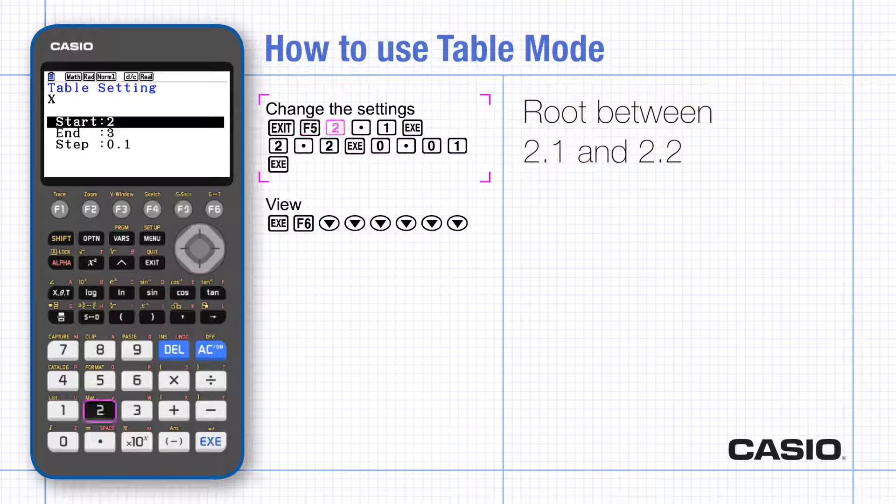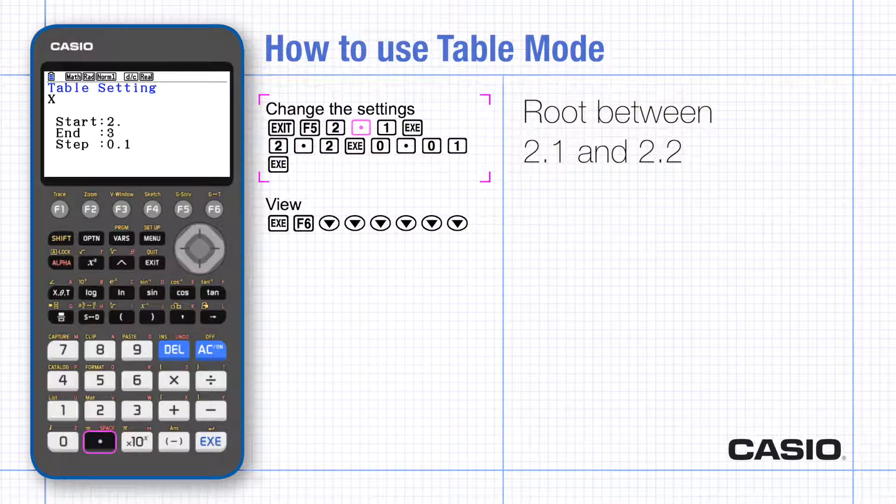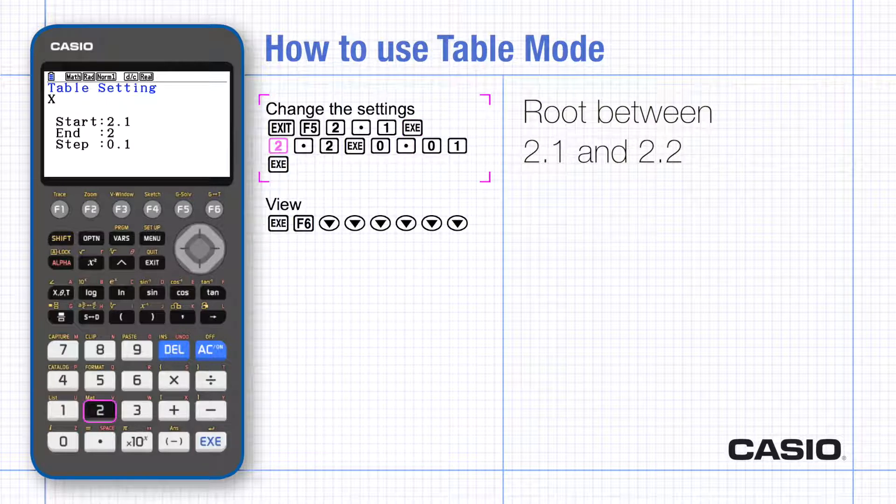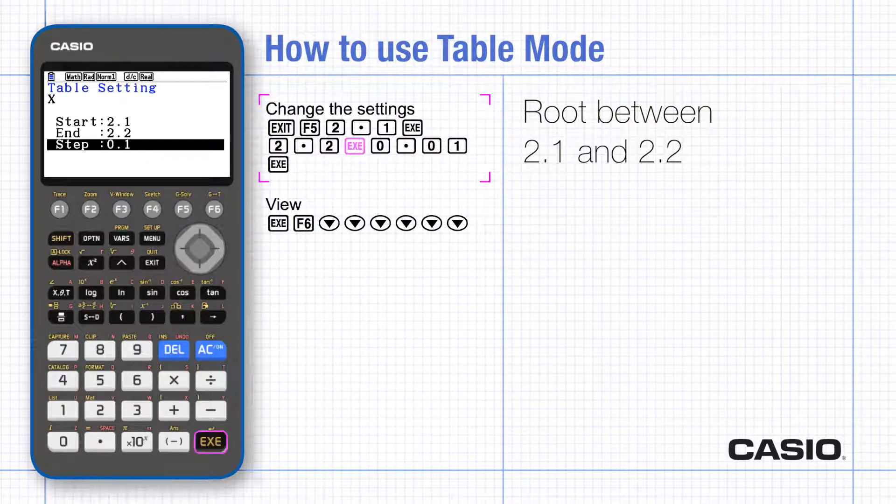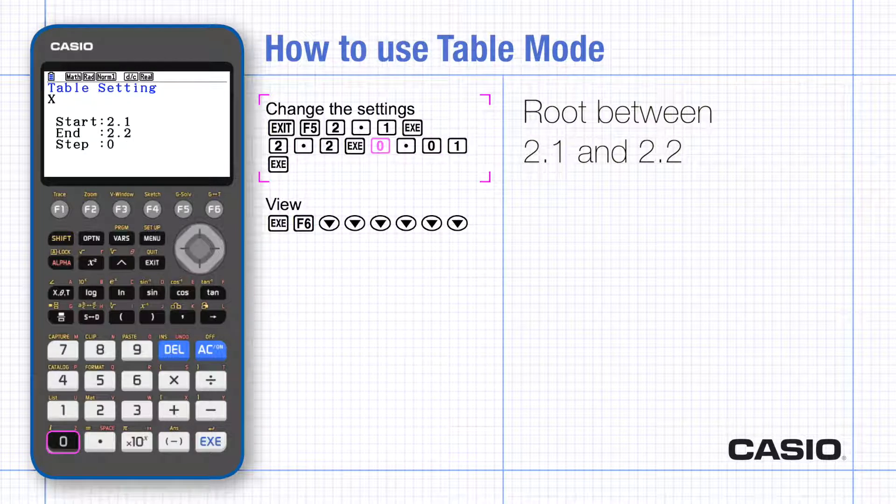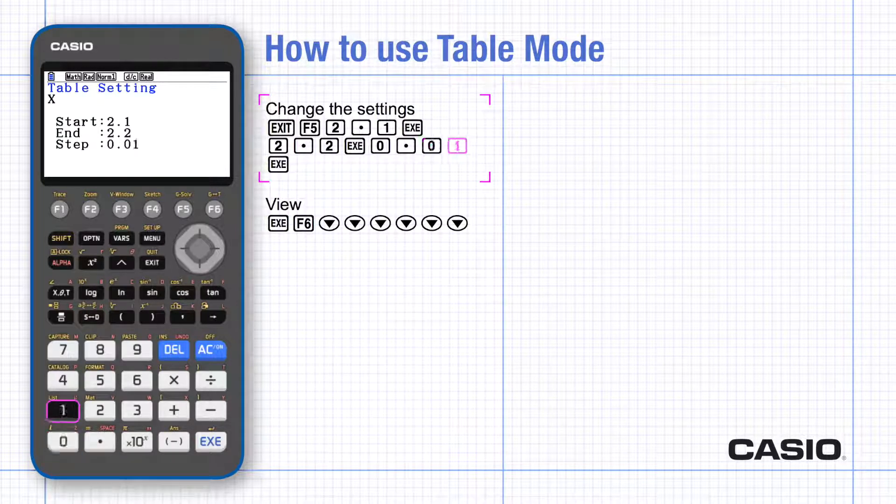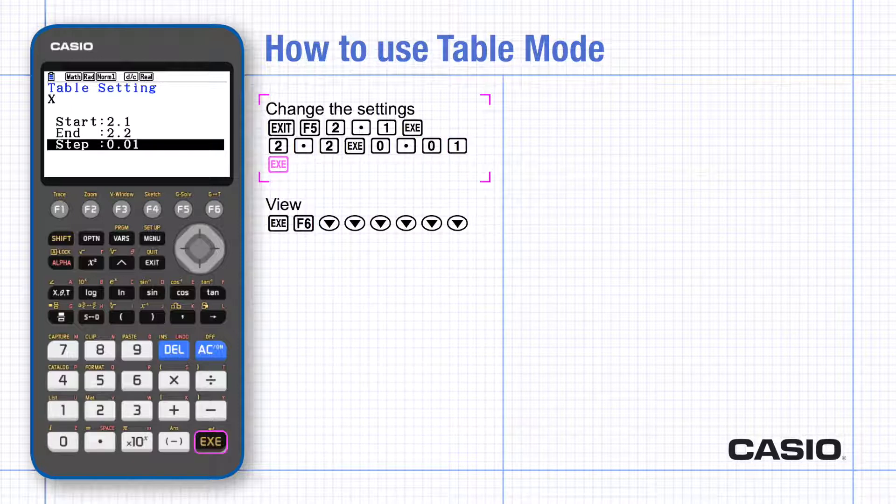So that the start is 2.1 and the end is 2.2, and then reduce the step size to 0.01. Enter to create the table.